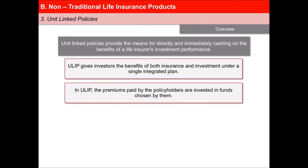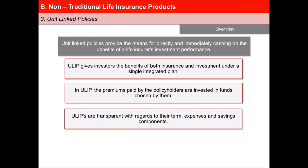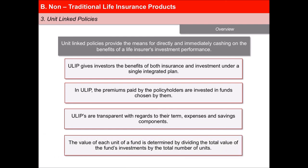In ULIP, the premiums paid by the policyholders are invested in funds chosen by them. This is done after deducting the allocation charges, administration charges, and charges for providing insurance cover. ULIPs are transparent with regards to their term expenses and saving components. The value of each unit of a fund is determined by dividing the total value of the fund's investments by the total number of units.